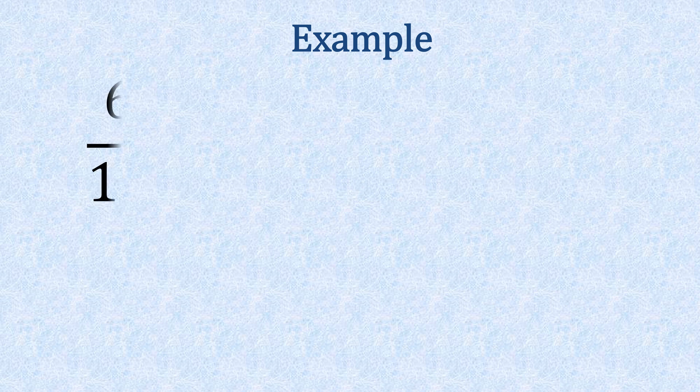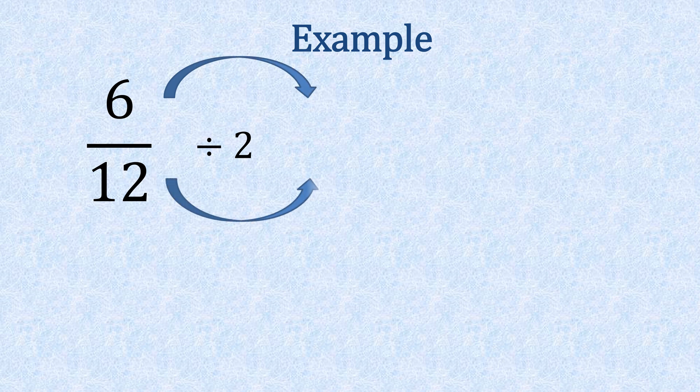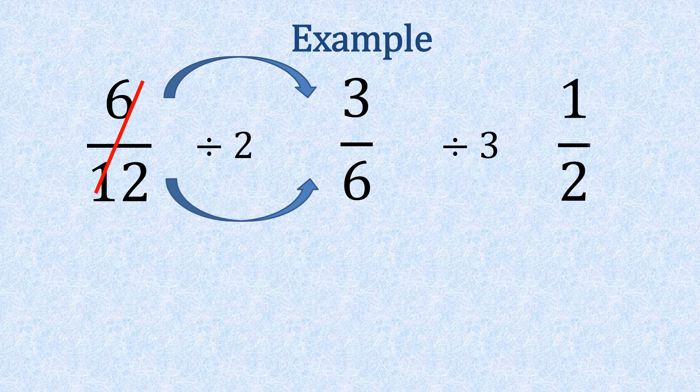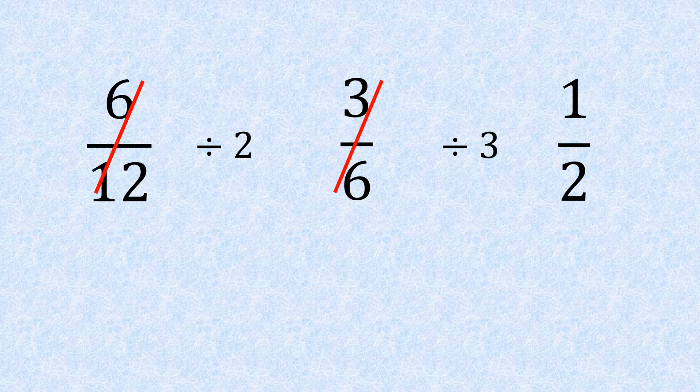Let's have a look at an example. If we have six twelfths, we divide the top and the bottom by two. So six divided by two gives us three and twelve divided by two is six. Now if we divided it by three, it would take us down to one half because three goes into three once and into six twice.